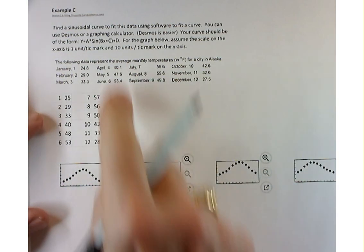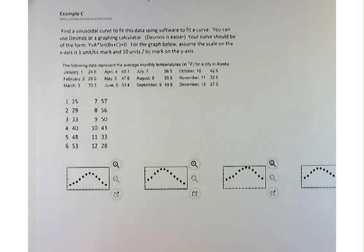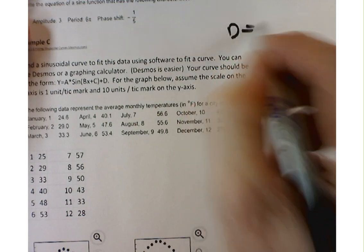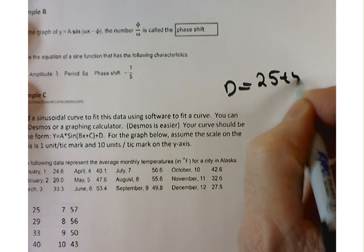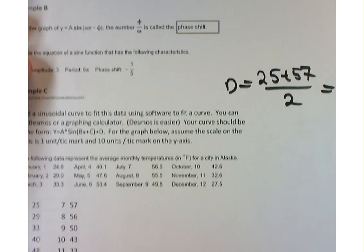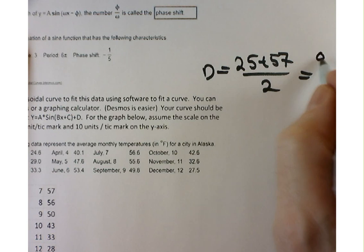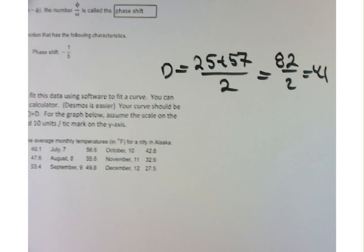The first thing I want to find is D, because I want to shift my graph up so that it's in the center of my data. Do you remember what we did to find D? It was something with a maximum and minimum. The average, yeah, find the average. So D is going to equal the average of 25 and it looks like 57. 25 plus 57 over 2. So it's going to be 82 over 2, 41. So there's D.